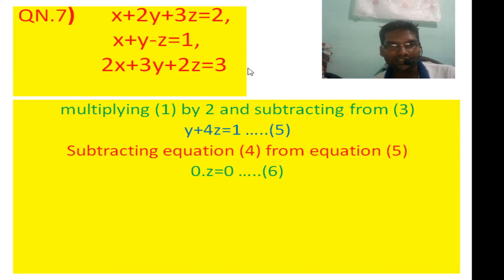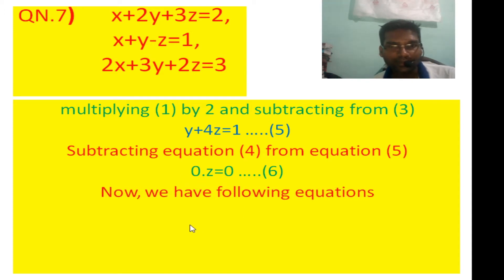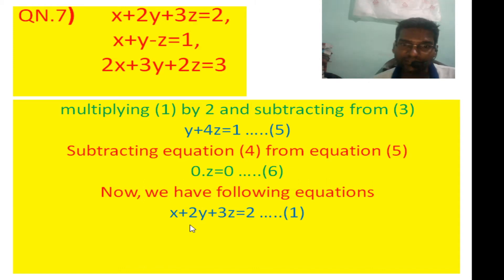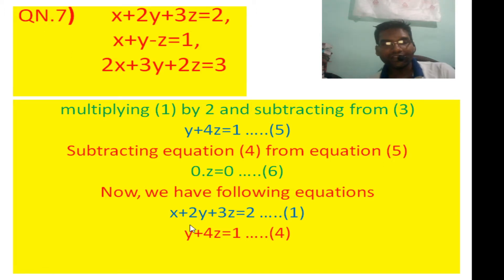We choose z as the free variable. With 0 into z equals 0, we have equation 3 with three variables x, y, z. The second equation reduces to y plus 4z equals 1, which gives us a single-variable relationship.